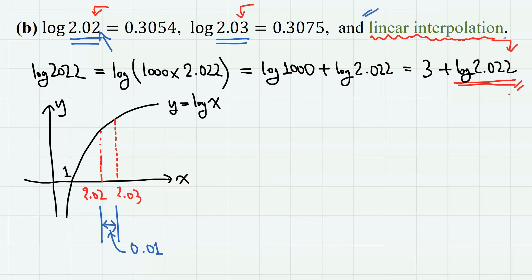Linear interpolation means that if the interval we are dealing with is very small, then inside that interval we can approximate this logarithmic function as a linear function. We are going to use this linear approximation to find the log values between 2.02 and 2.03.